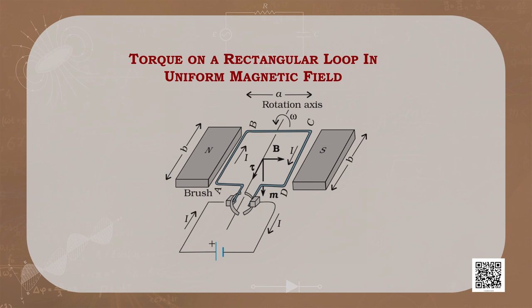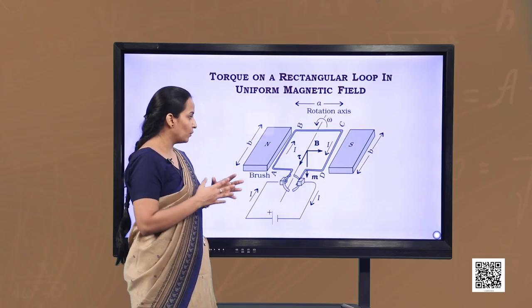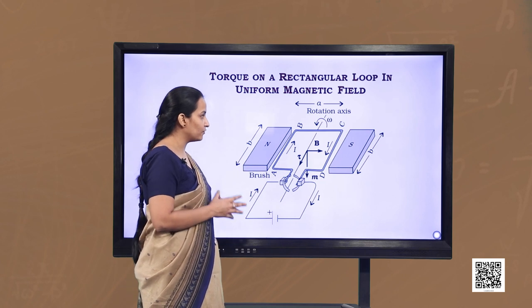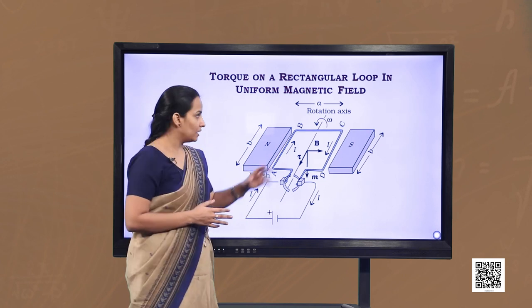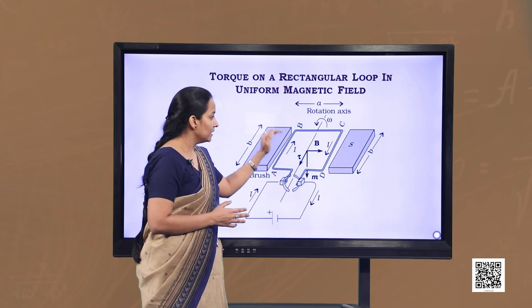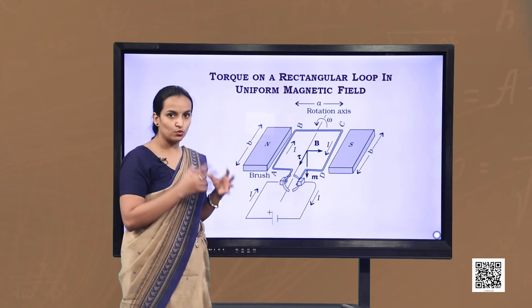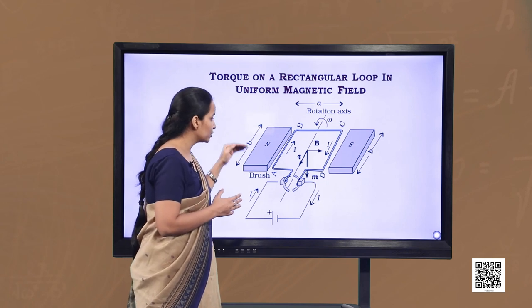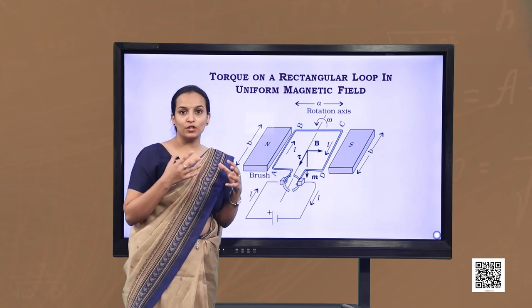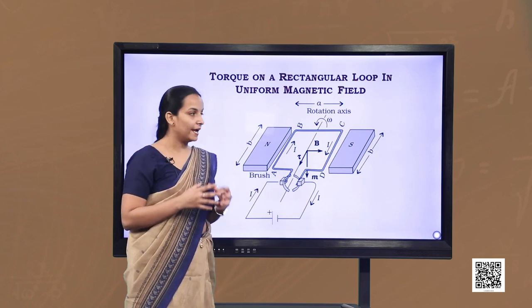In the given diagram, ABCD loop is placed in a magnetic field such that the plane of the loop lies in the plane of the uniform magnetic field. We find the force on BC and AD. The current elements of these two arms are in the direction of the magnetic field, so they will not experience a force at all.